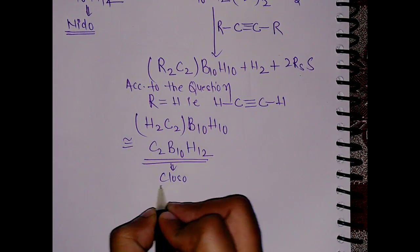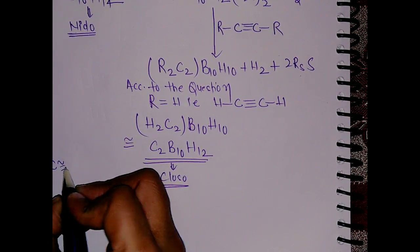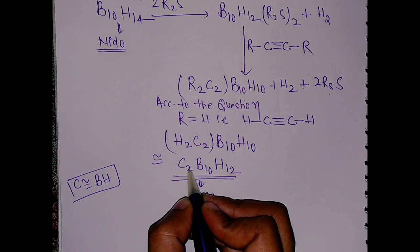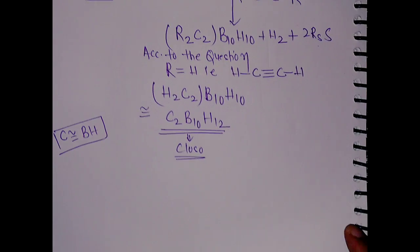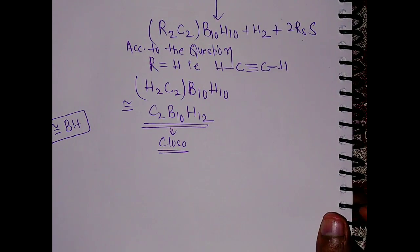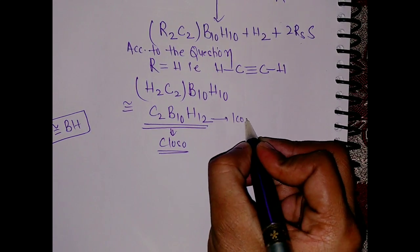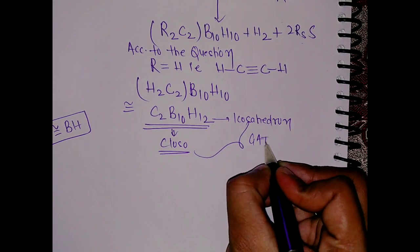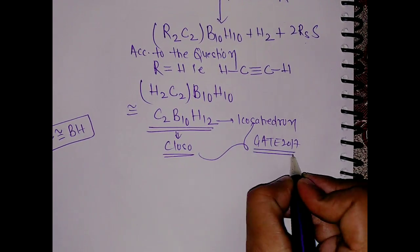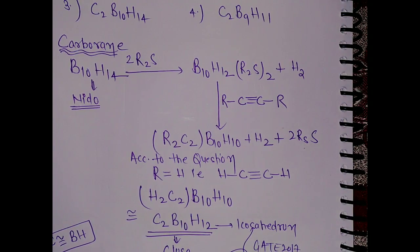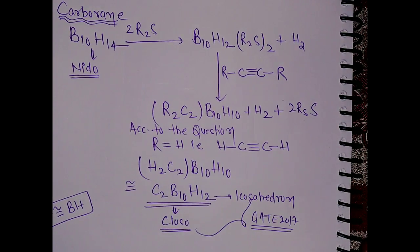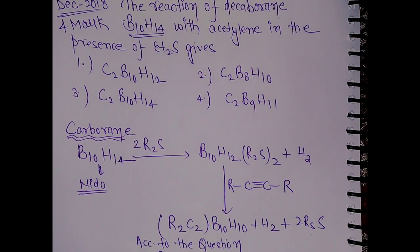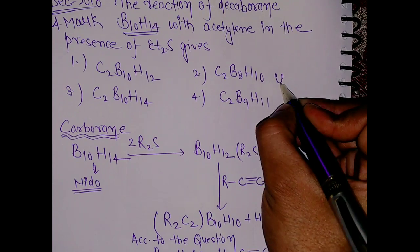C₂B₁₀H₁₂ is a closoborane. For the structure, note that the C group is equivalent to BH — substitute C with BH, take it twice, then reduce, and you get the closoborane structure, which is an icosahedron. These two things — the synthesis and the icosahedral structure — were also asked in the GATE 2017 examination. Thank you and please subscribe to my channel.